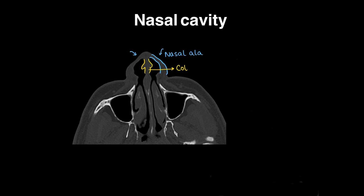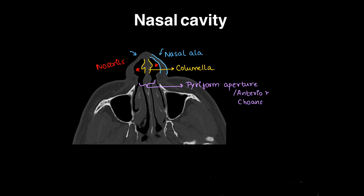On axial CT sections of nasal cavity anatomy, we can see the nasal alae on both sides. The anterior part of the septum where bone is not present is the columella, and we can see both nostrils — right and left. The openings here are called piriform apertures, which are the anterior choanae. The nasal septum has a bony part and mucosa, dividing the nasal cavity into right and left.